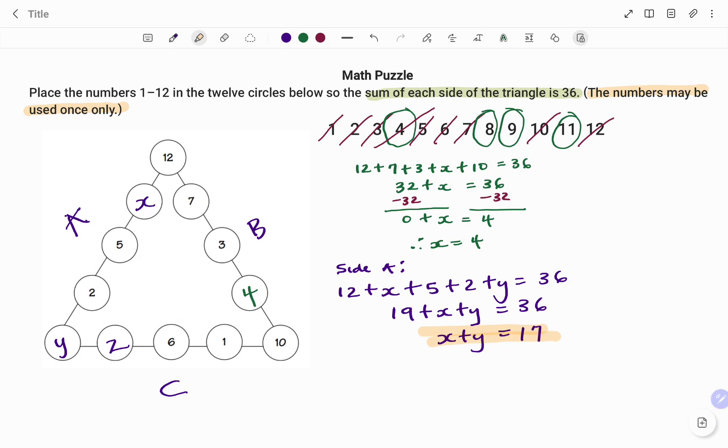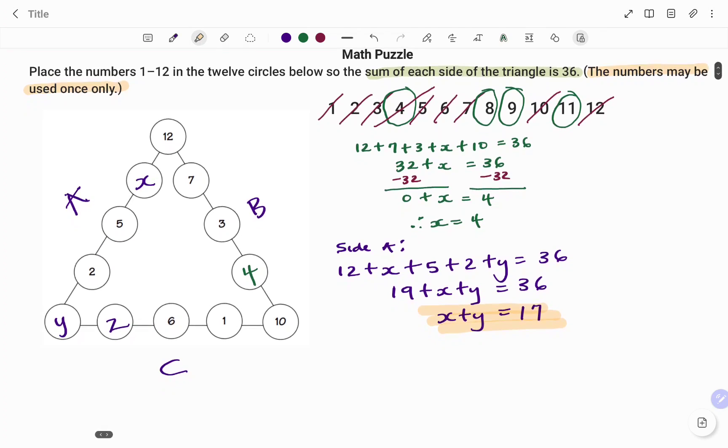The second step is I have, for my C side, I have y plus z plus 6 plus 1 plus 10 will give me 36. y plus z plus, I have 6 plus 1, that's 7, plus 10, 17 equals 36. And subtracting that 17 from both sides, I have y plus z equals 36 minus 17, which is 19. So that will be my second equation: y plus z equals 19.